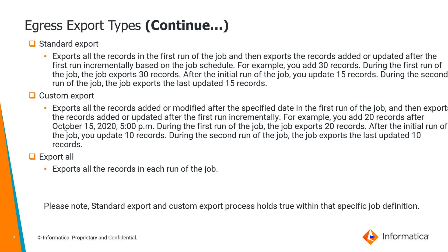Custom Export allows the user to specify a date range — for instance, 'I need an export within this particular date-time' — and the export is triggered accordingly. The final option, Export All, exports every record in each run of the job. Please note that Standard Export and Custom Export behavior applies within that specific job definition.